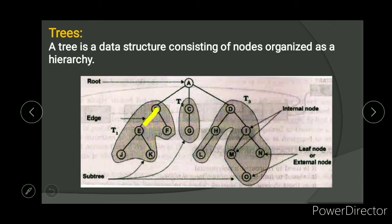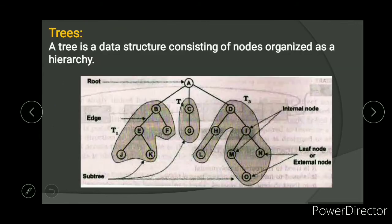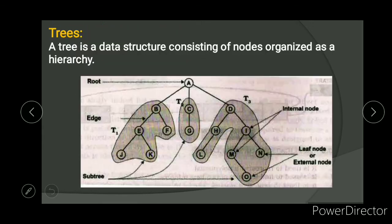A parent is an immediate predecessor node. For example, A is the parent of B, C, and D, and B, C, D are the children of parent node A. A child is a successor of a parent node. For example, E and F are the children of node B.